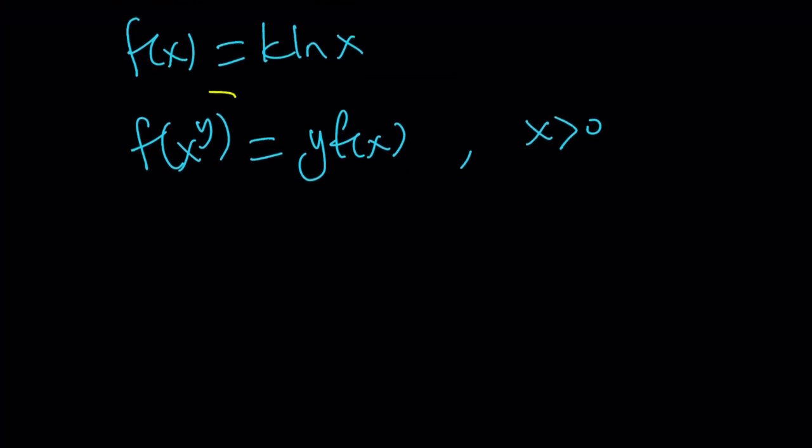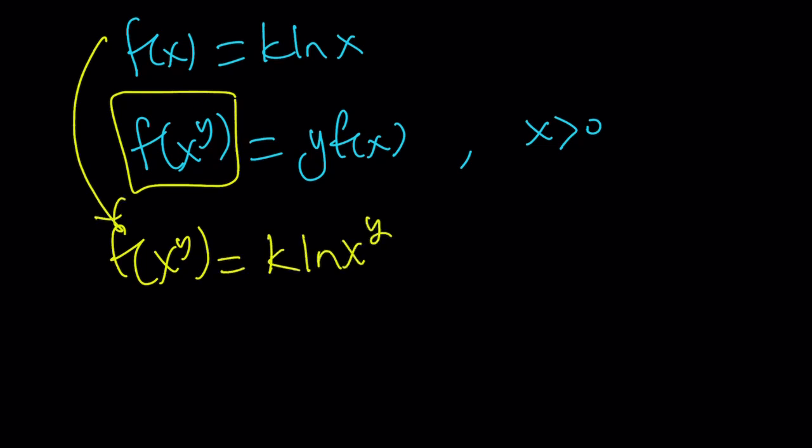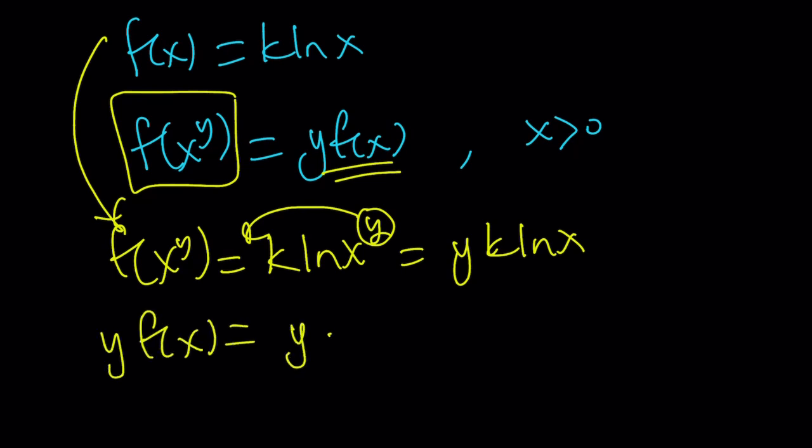So I'm going to evaluate f of x to the y. f of x to the y by this is equal to k times ln x to the y. And this can be written as move the y to the front, y k ln x. Now what about the second part? y f of x can be written as y times f of x, which is k ln x. y times k ln x can be written as y k ln x. And notice that these two are the same, which means our solution checks.